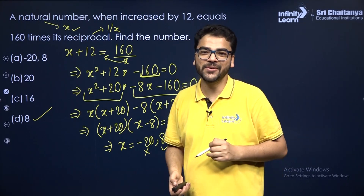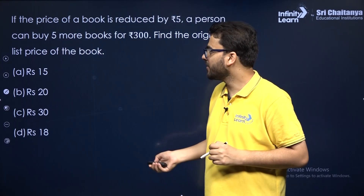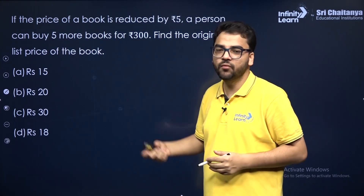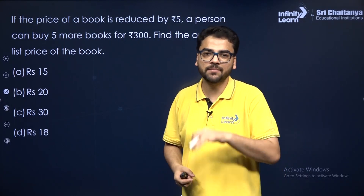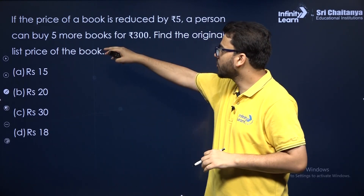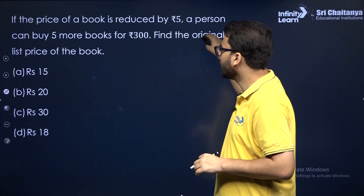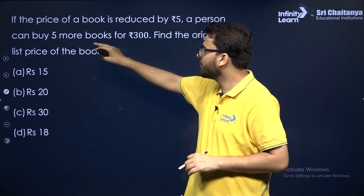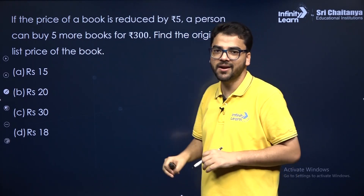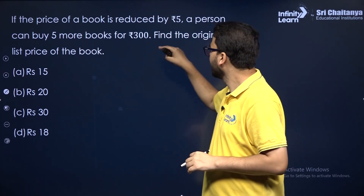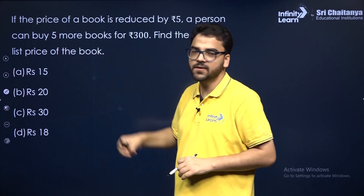I hope that's clear. Let's do one more word problem that can come in an MCQ. If the price of a book is reduced by 5, a person can buy 5 more books for 300. Find the original list price of the book.